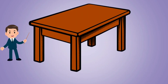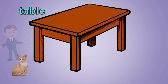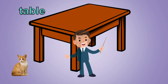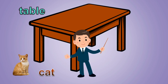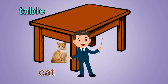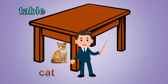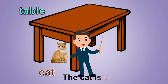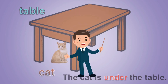What is it? It is a table. What is it? It is a cat. Where is the cat? The cat is under the table.